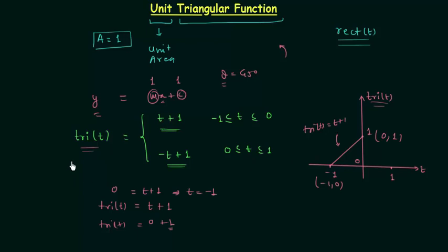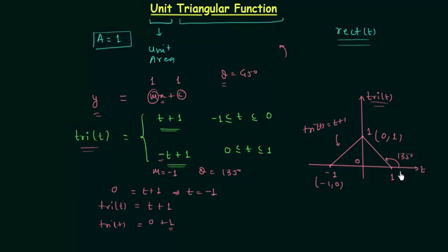In the same way we obtain the second straight line tri(t) equal to minus t plus 1. For this line the slope is minus 1, which means theta is equal to 135 degrees. As we measure theta in the anticlockwise direction, we have 135 degrees as the value of theta, and tan 135 degrees is equal to minus 1. For the first straight line theta is simply equal to 45 degrees.